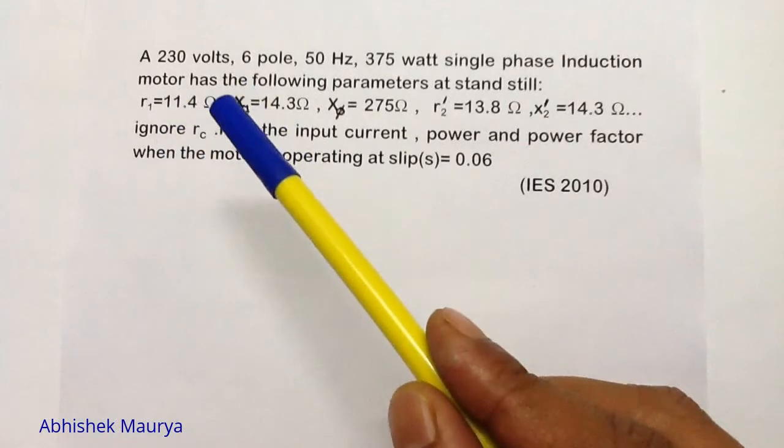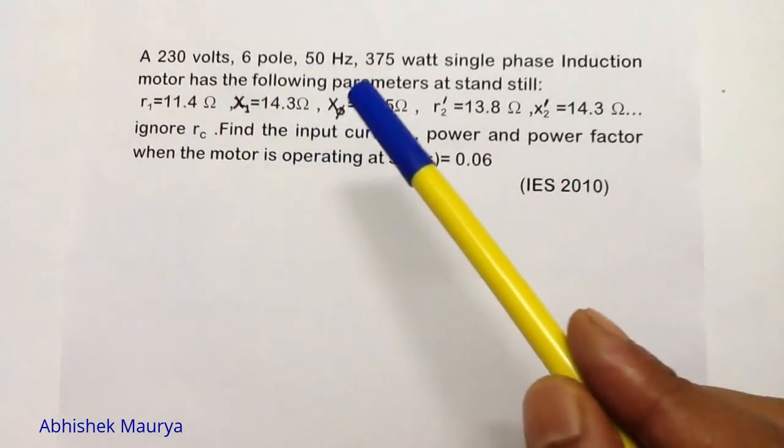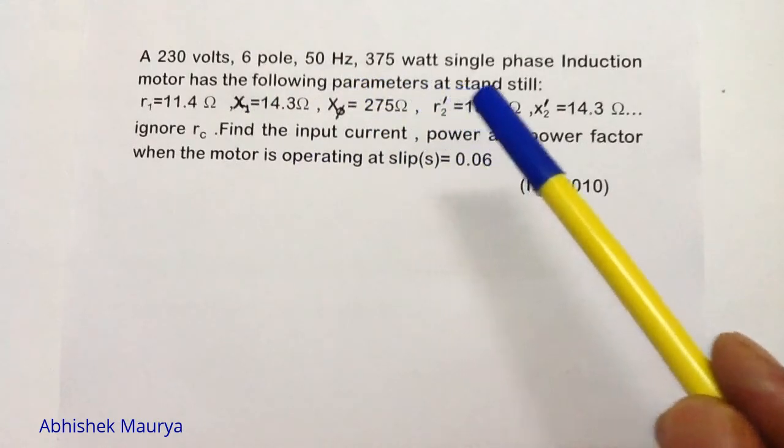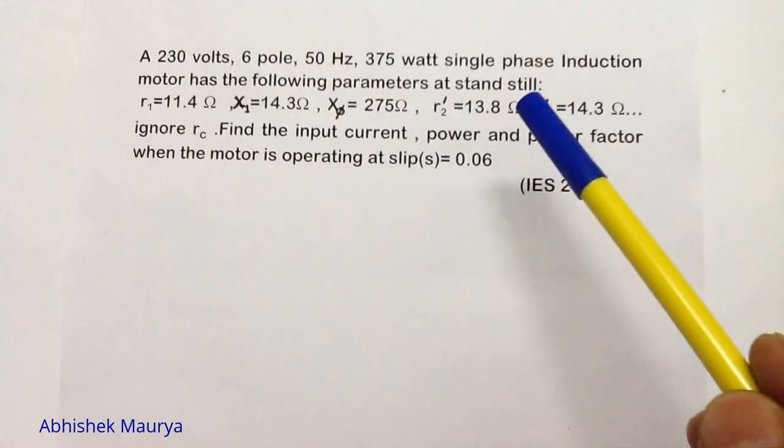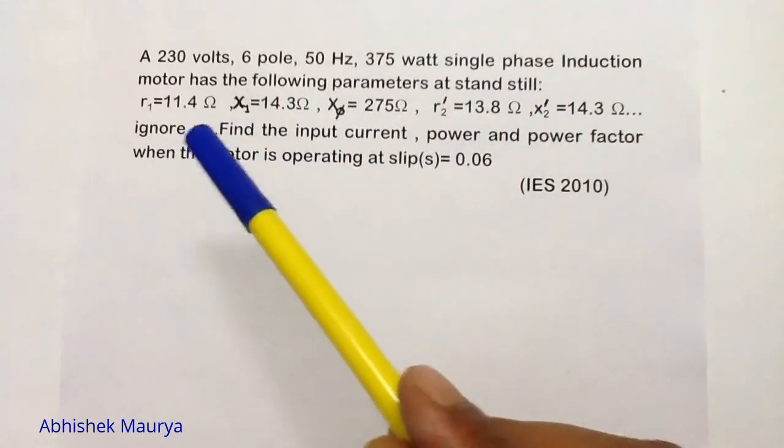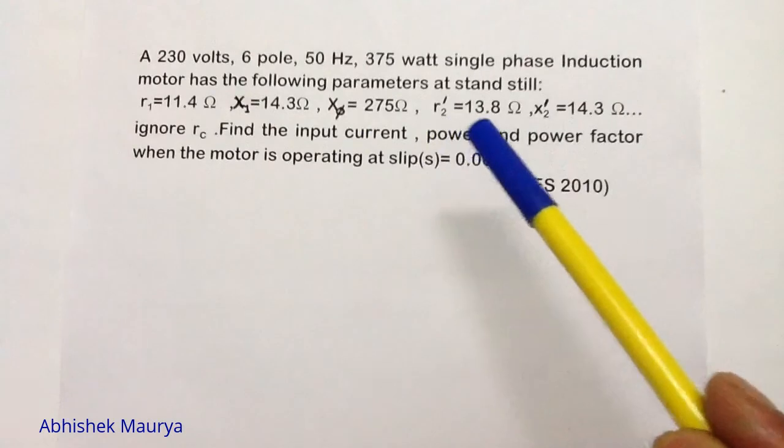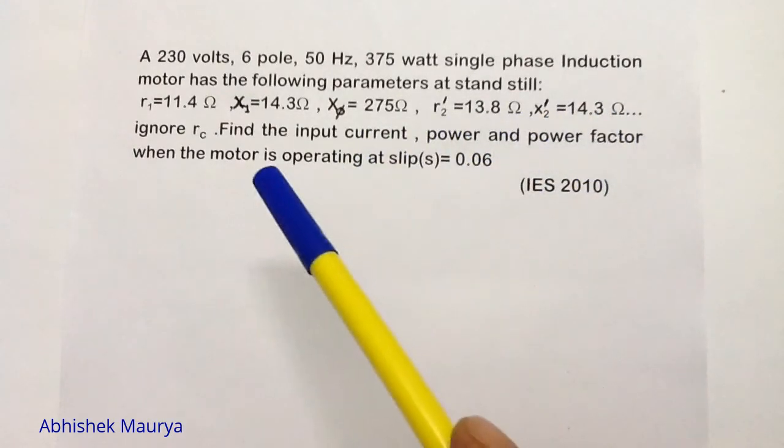In this question, a 230 volts, 6 pole, 50 hertz, 375 watt single phase induction motor has the following parameters at standstill. The values of R1, X1, X5, R2 dash, and X2 dash are given to us.